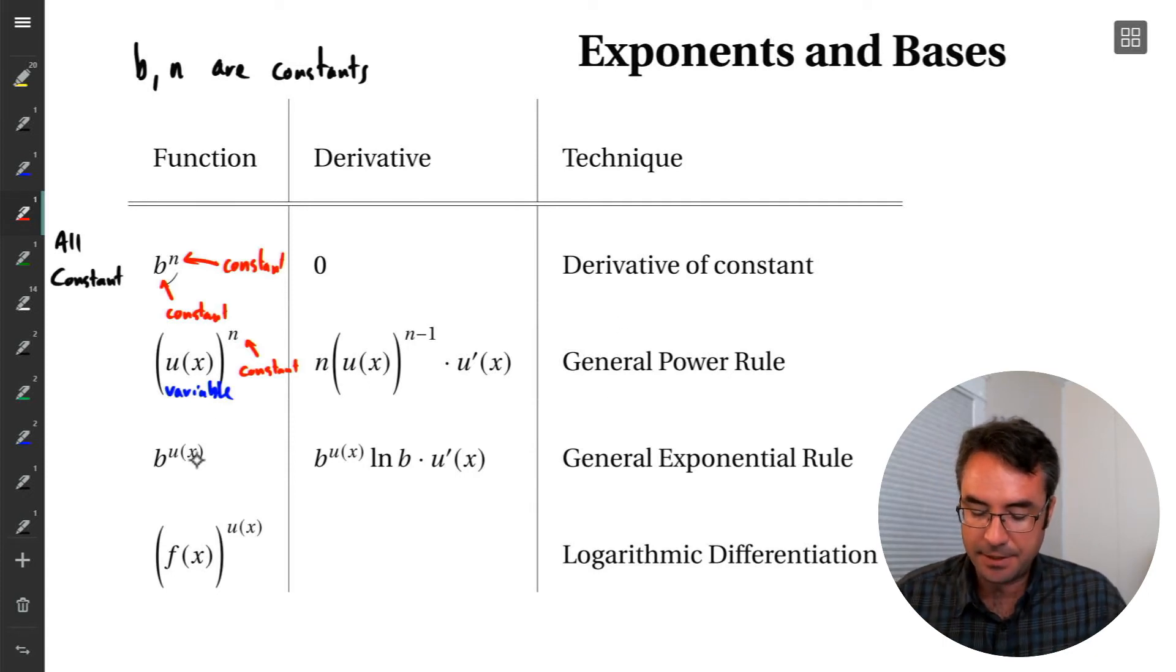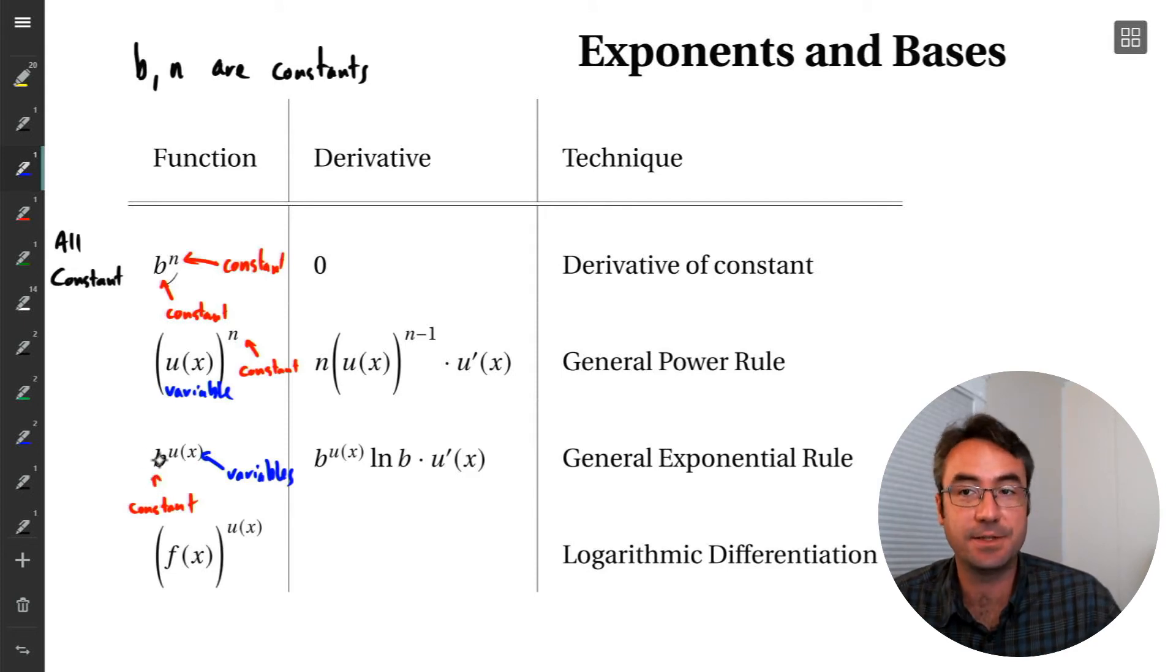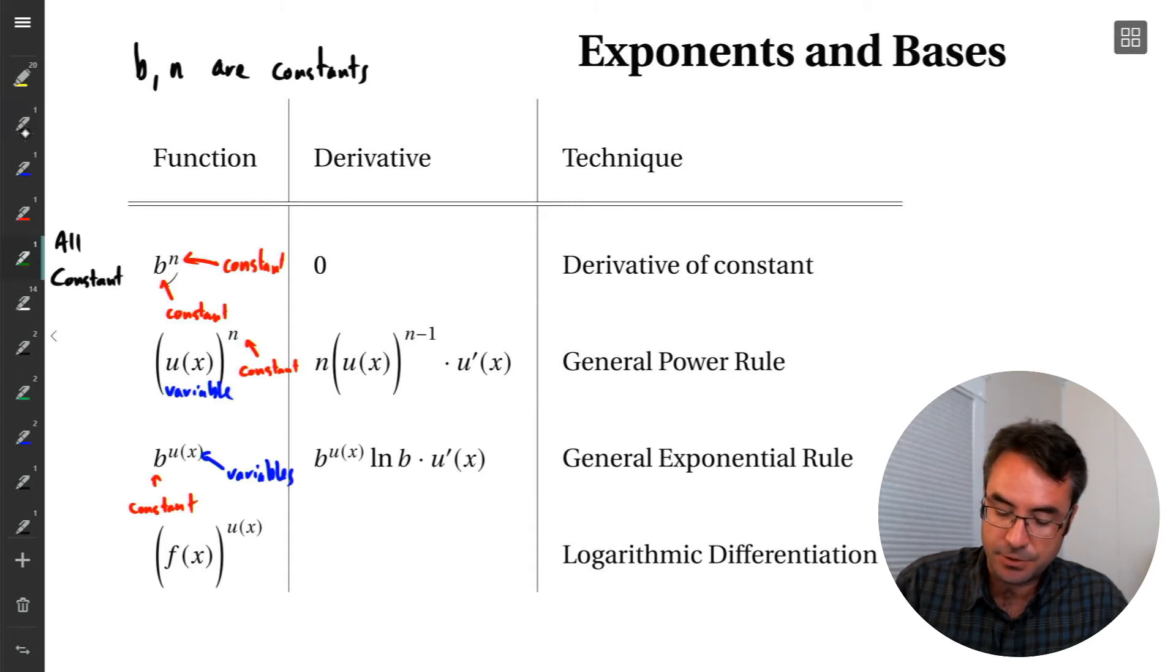Another possibility for this exponent and base discussion is if the base term is a constant, but the exponents are variables. So if we have an exponential function, the base term is just a constant, and then we have variables in the exponent. And we saw how to differentiate this. We had our general exponential rule, which for general base b would be b raised to the power u of x times natural log b. That's the derivative of our outer exponential function, and then times the derivative of the terms in the exponent. So both of these are just a special case of the chain rule here.